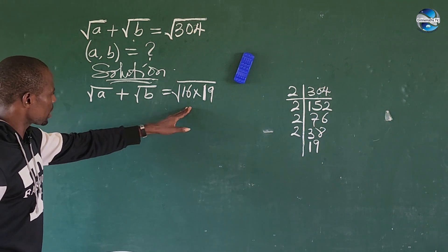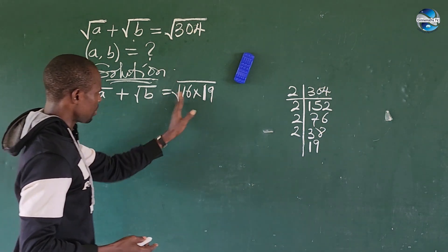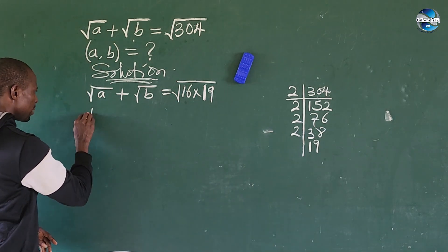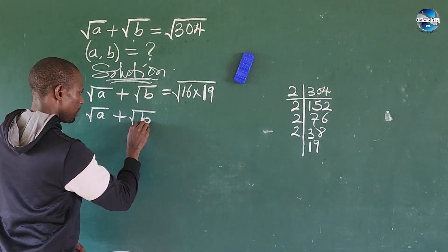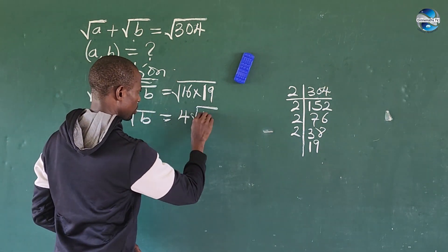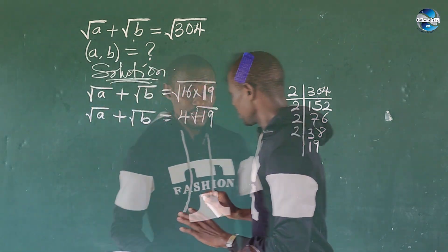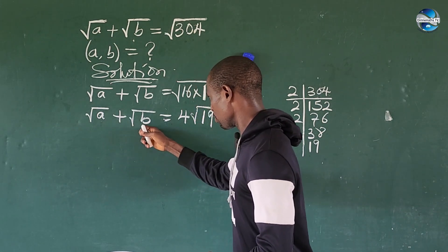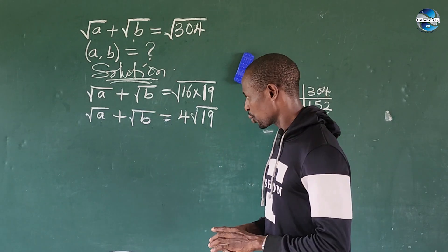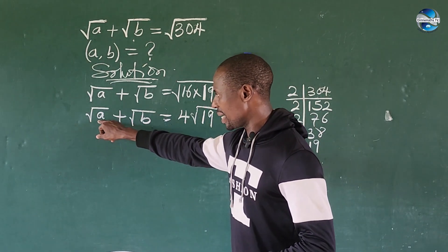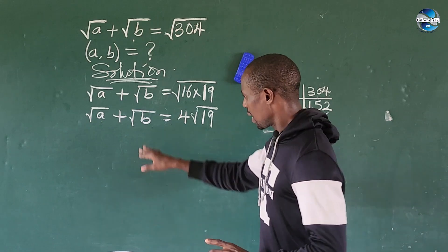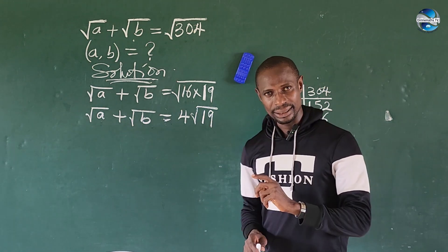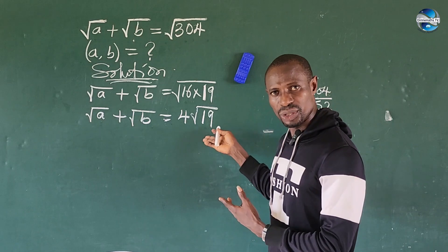According to the law of radicals we can separate the factors. Since 16 is a perfect square, the square root of 16 is 4. So we have: square root of a plus square root of b equals 4 times the square root of 19. From here, I'm going to do a substitution — I'll represent a and b with quantities that keep the square root of 19 in mind.